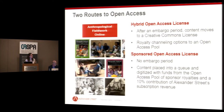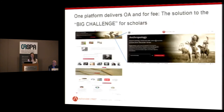This is just a quick summary of the two routes to open access we've been using most prominently in terms of working with archives. The hybrid open access model means that after a period of time, the content becomes open once we've been able to recoup the costs. The sponsored model is where we channel a segment of our revenue into an open access pool. Both of these are actually quite popular with the archives we work with.